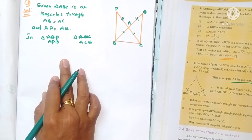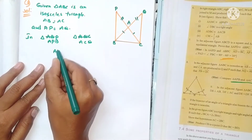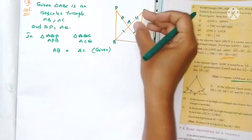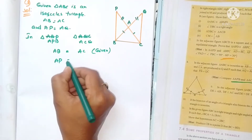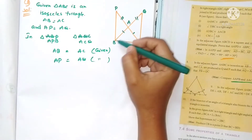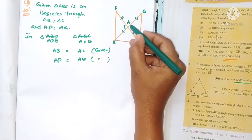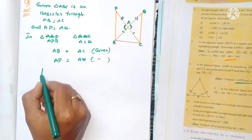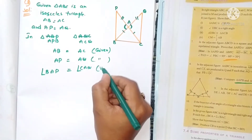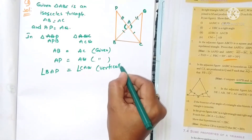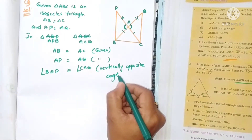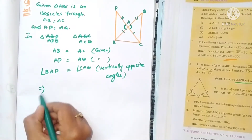Now, AB equals AC — this is given. And AP equals AQ — this is also given. Since these are intersecting lines, the vertically opposite angles are equal, so angle BAP equals angle CAQ.